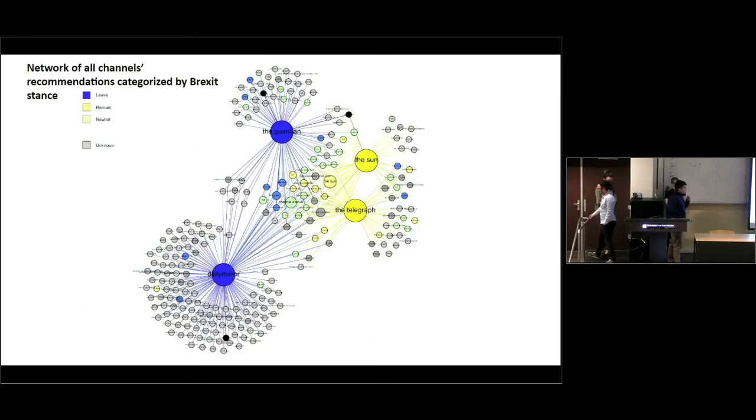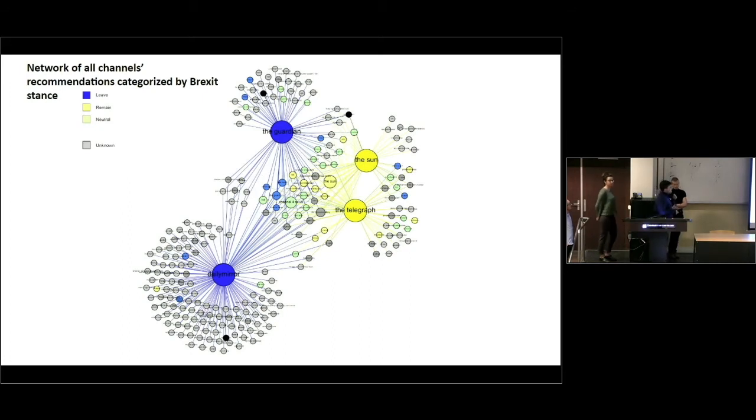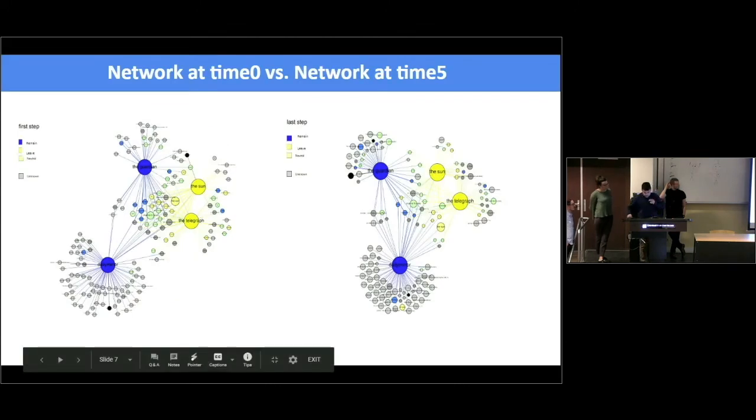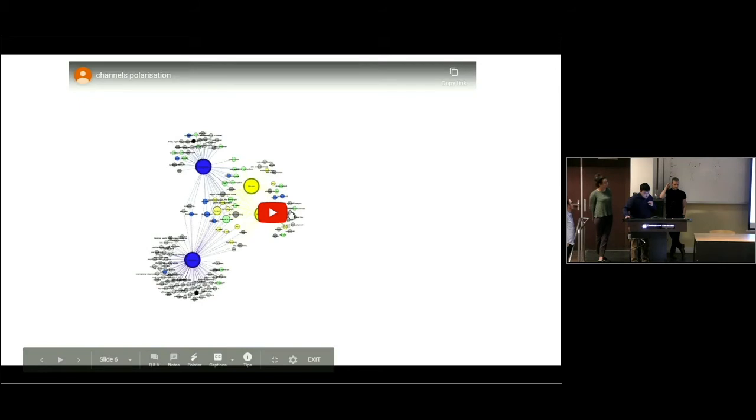This is one of the visualizations we got, and you can see Telegraph and Sun are the personalized users that have seen five videos of the same channels. The nodes over there are the recommended channels that we got with the tool. The color of the channels refers to their position on Brexit. This was the graph with all the recommendations that we got watching five videos, but those are steps that we actually have done that we can visualize.